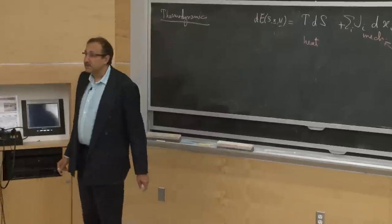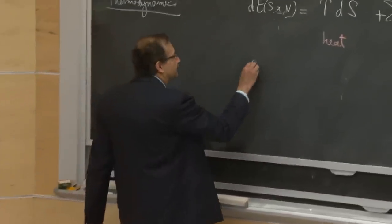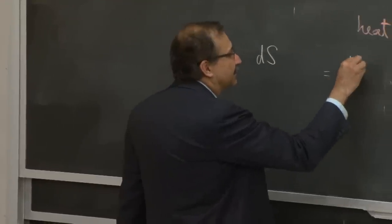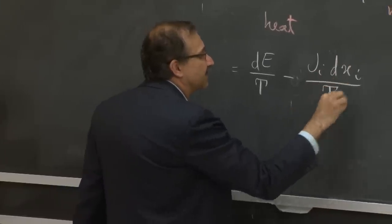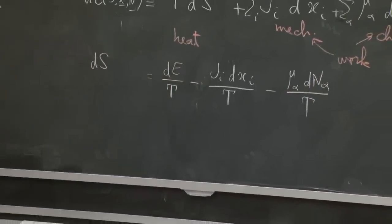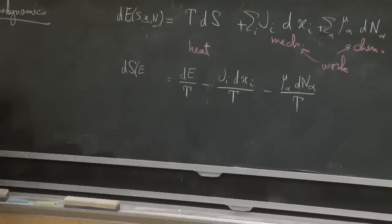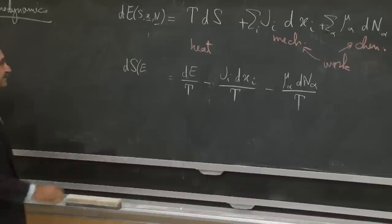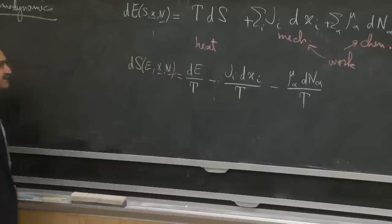Having gotten this fundamental relation, we can manipulate and write it in different fashion. For example, we can write dS = dE/T − Ji dXi/T − μ_α dN_α/T. So you could, in principle, express everything in terms of the energy content of the system and the variables you need to make work-type changes, rather than in terms of entropy, which for some circumstances may not be the right variable.